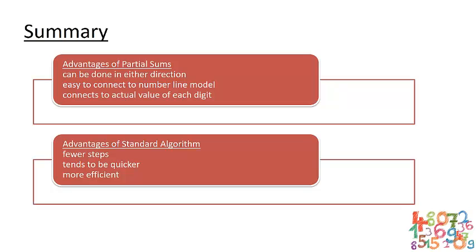Also, as a teacher, you should know the benefits and drawbacks of using certain algorithms. For instance, some of the advantages of the partial sums method is that it can be done in either direction, either starting at the left or starting at the right. Partial sums is also fairly easy to connect to the number line model using specific jumps. And finally, it connects actual value to each one of the digits. So for example, a 2 in the tens place really means 20. And that's something that's potentially lost with the standard algorithm.